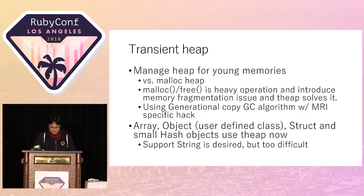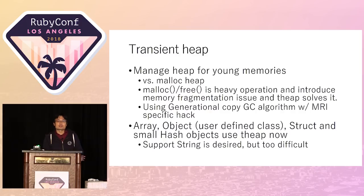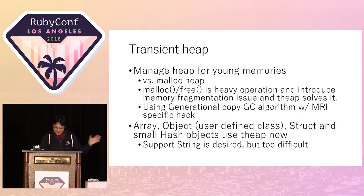The malloc and free combination has several performance issues regarding speed and space because of fragmentation. To solve these malloc issues, I introduce transient heap. I don't show all the details about transient heap because I have only 40 minutes and this talk is not primarily about transient heap. I only want to share the concept.